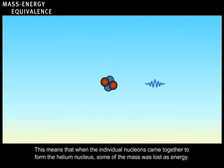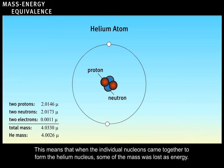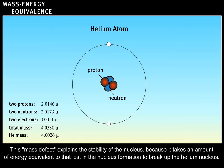This means that when the individual nucleons came together to form the helium nucleus, some of the mass was lost as energy. This mass defect explains the stability of the nucleus, because it takes an amount of energy equivalent to that lost in the nucleus formation to break up the helium nucleus.